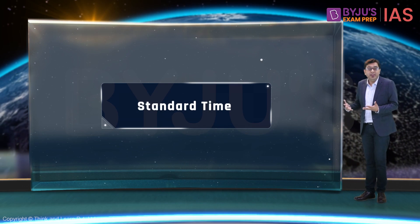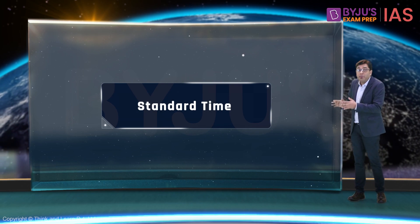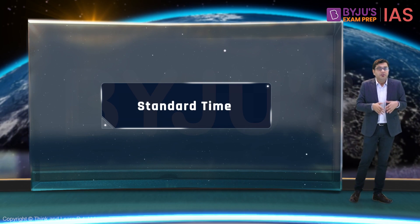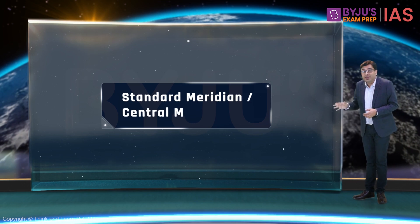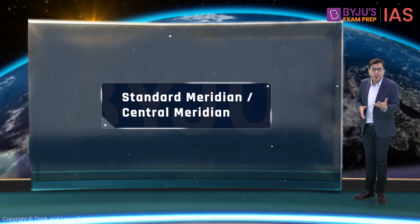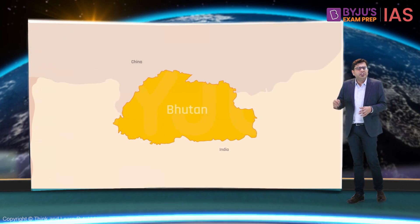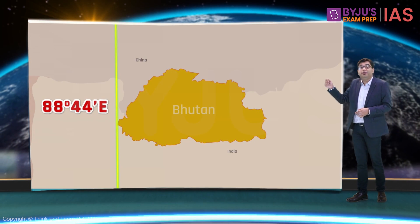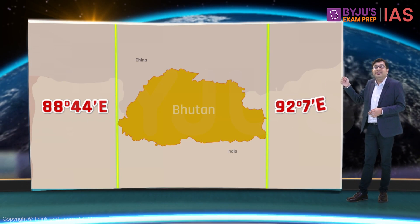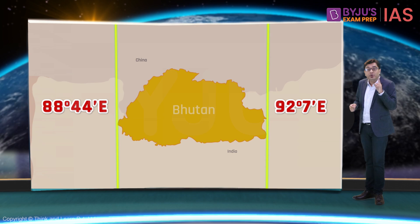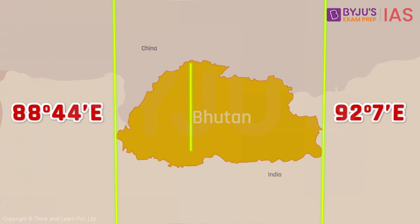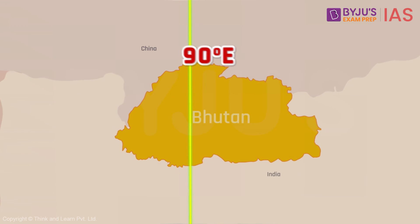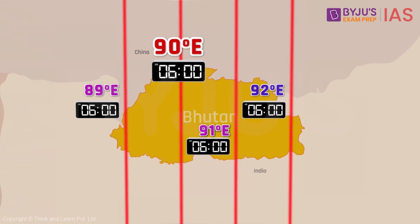Standard time means that for a region or an area, a common time is taken as standard, governed according to one longitude called the standard meridian or central meridian. For example, for the entire country of Bhutan, which stretches from 88°44'E to 92°7'E, only one longitude — 90 degrees East — is used for calculating standard time. Thus, it doesn't matter where you are in Bhutan; your watch will show 6 PM when it is 12 noon at Greenwich.